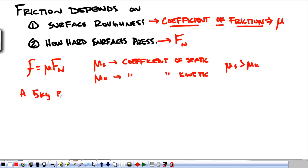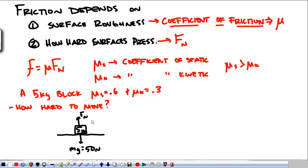A five kilogram block has a coefficient of static friction of point six and a coefficient of kinetic friction equal to point three. How hard do I have to push before this object moves? We have a five kilogram object. It's got weight that's equal to 50 newtons and a normal force from the surface that it's sitting on. I want to know how hard I have to push to get it to break free, and I'm pushing up against static friction. Static friction is going to be equal to mu times my normal force.